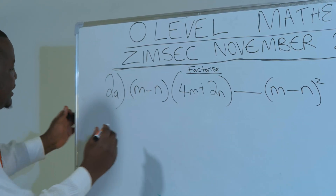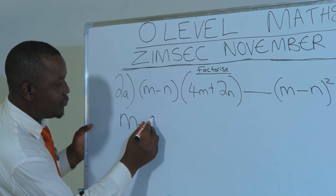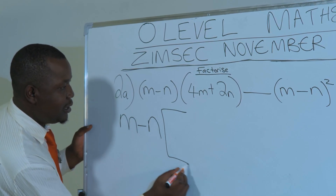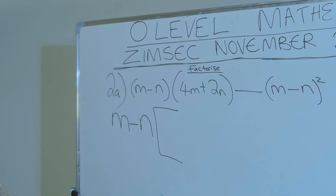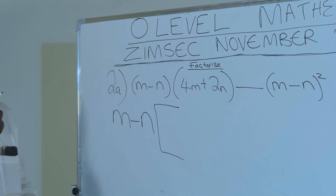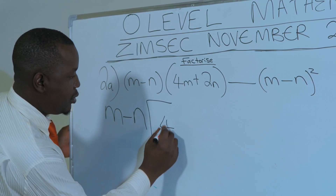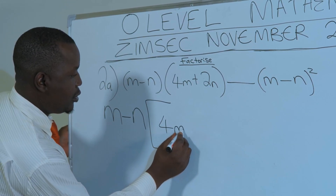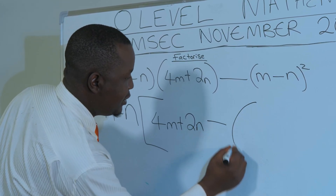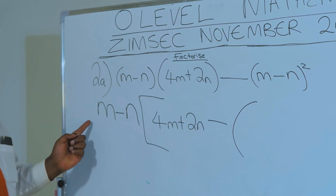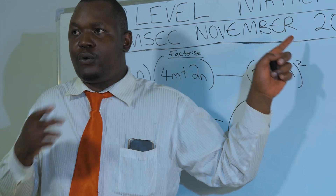So I'm going to factor out M minus N. And then M minus N getting into M minus N, they cancel out — they go for a honeymoon — and then we are left with 4M plus 2N. Minus.